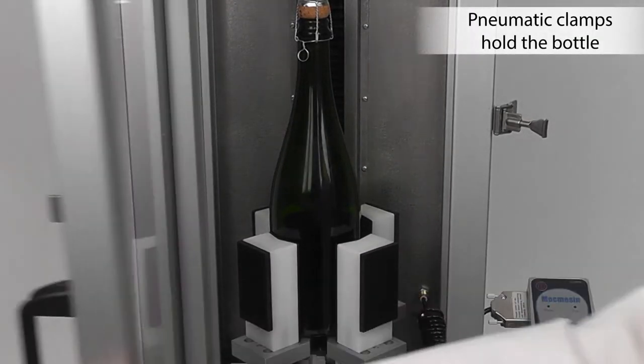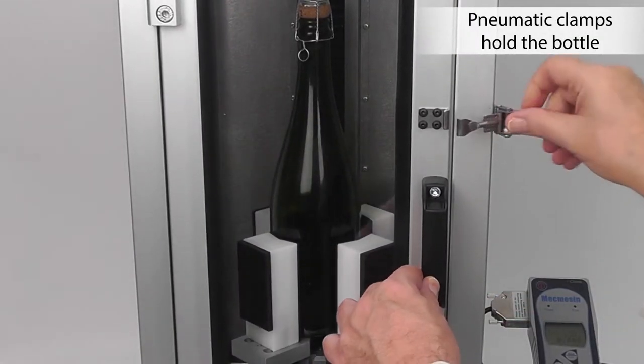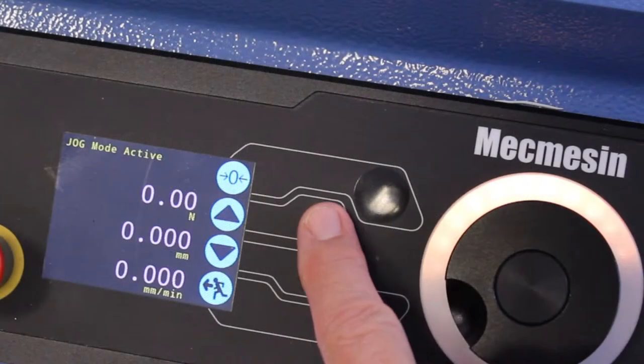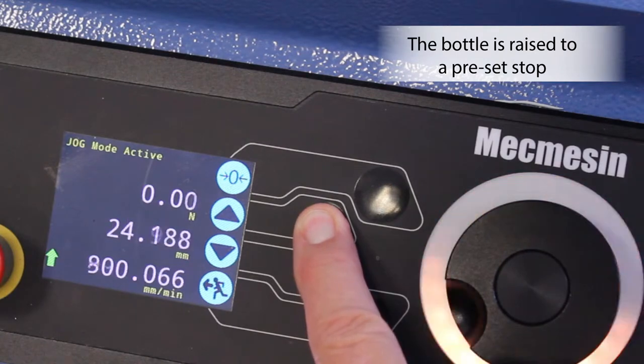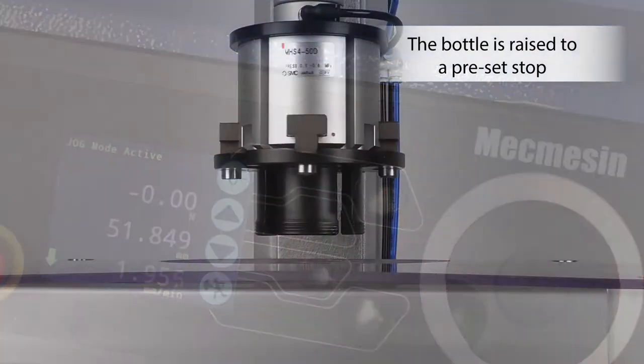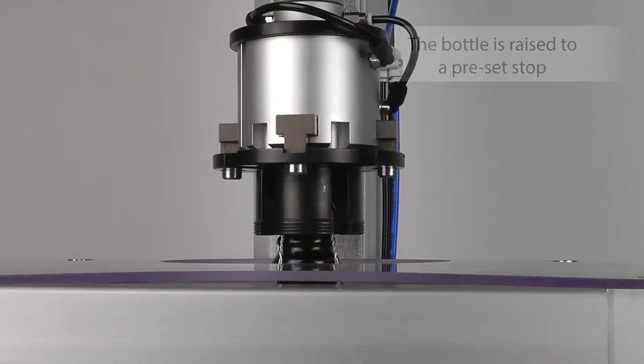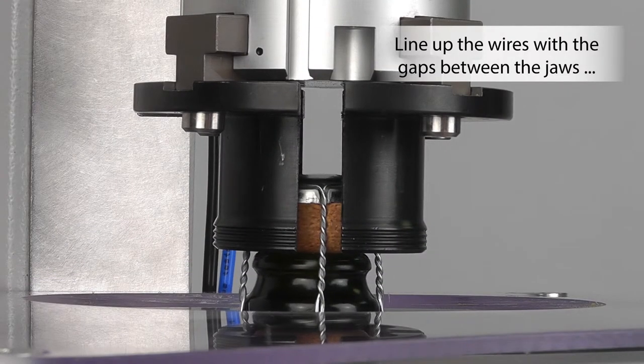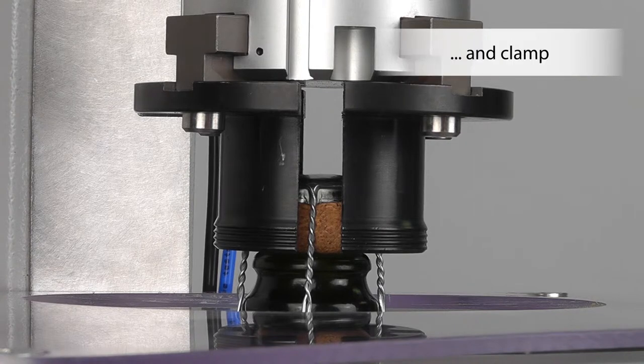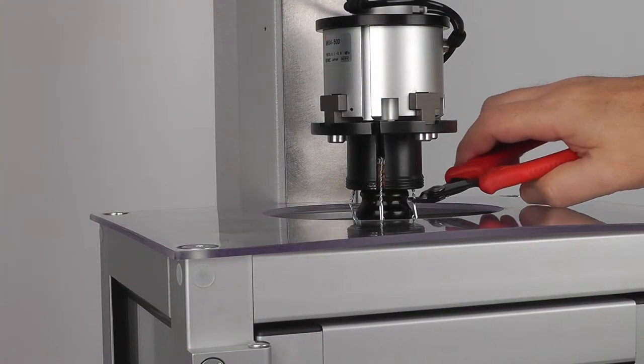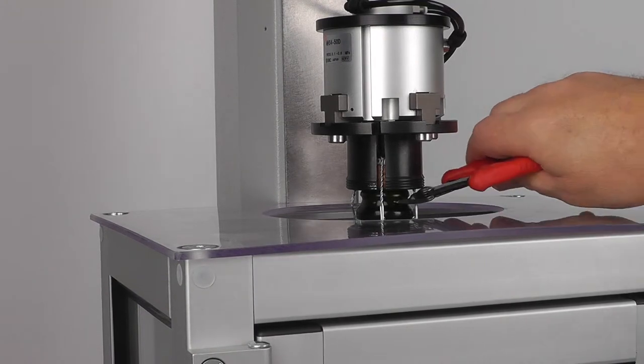Testing time is kept to a minimum by using pneumatically operated clamps to secure the bottle. The motor raises the bottle to a preset stop and the closure is then firmly clamped in the upper grip. The wires of the muzzle cage can now be cut.